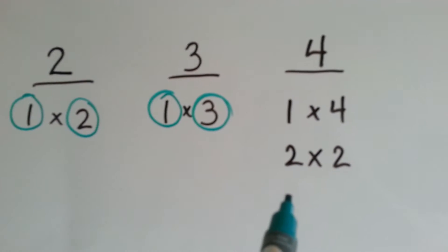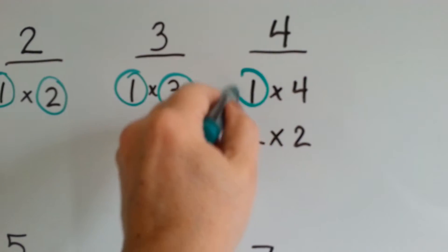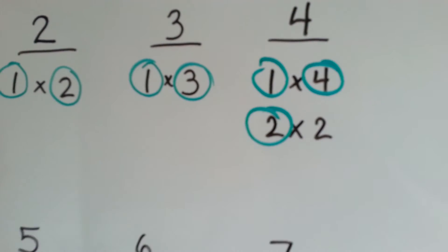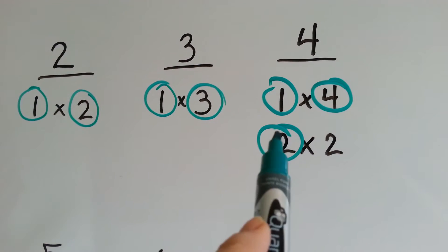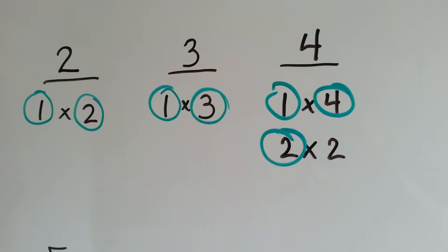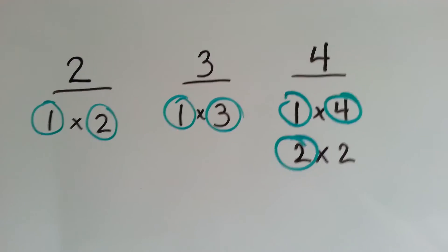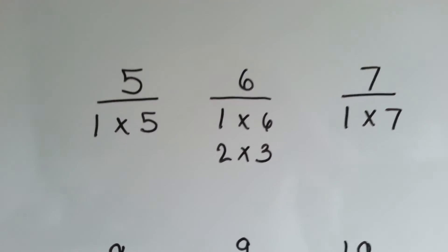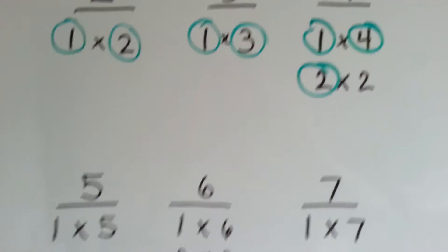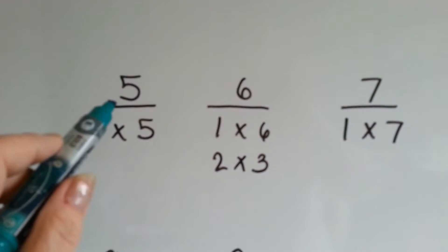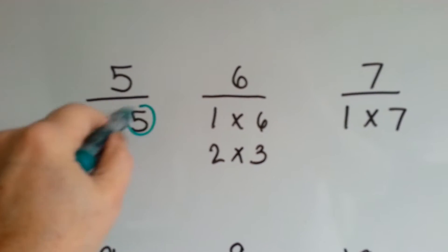4 has a little more. 4 has the factors 1 and 4 and 2, because 1 times 4 is 4 and 2 times 2 is 4. So 1, 4, and 2 are all factors of 4. See how I didn't count the other one because we already counted a 2. For 5, we have a 1 and a 5 — those are factors of 5.